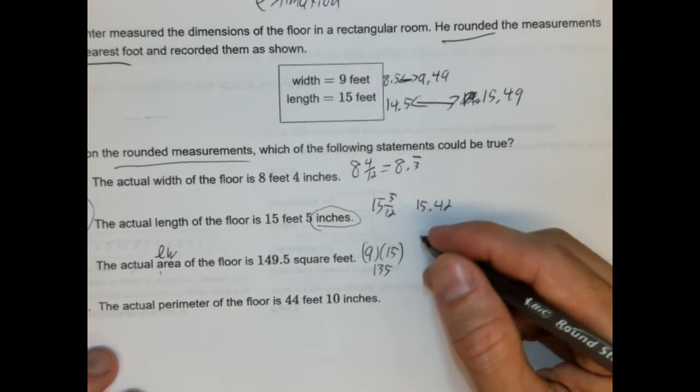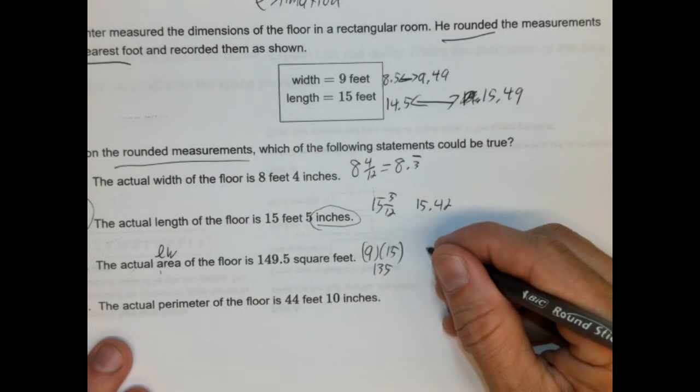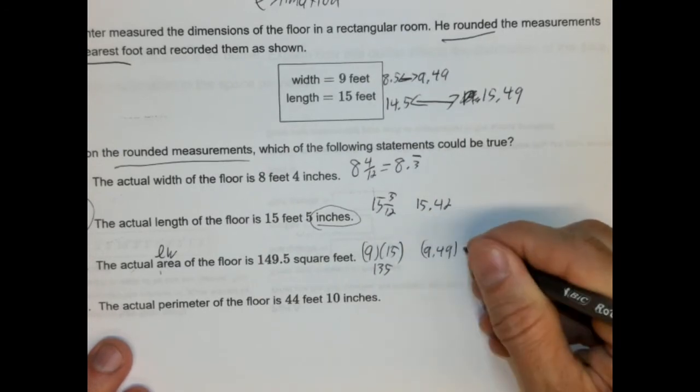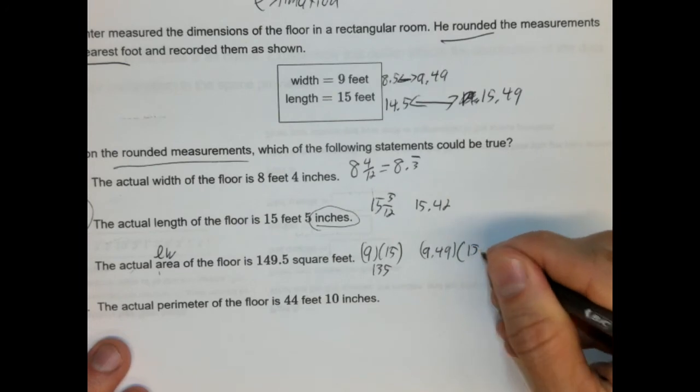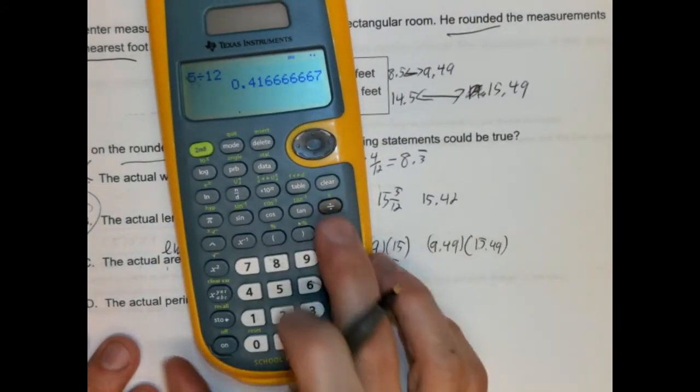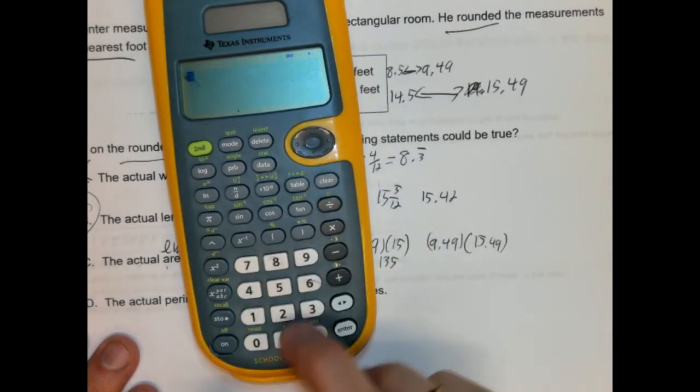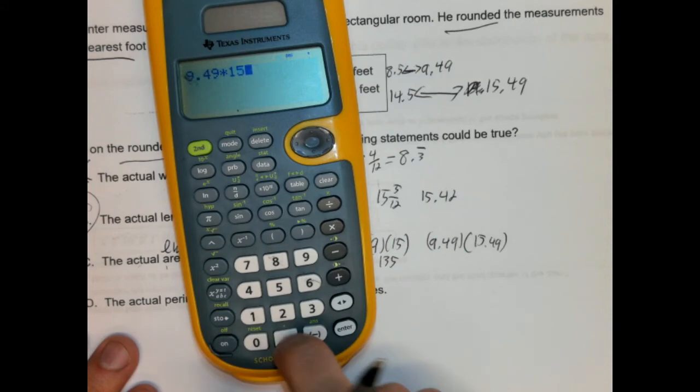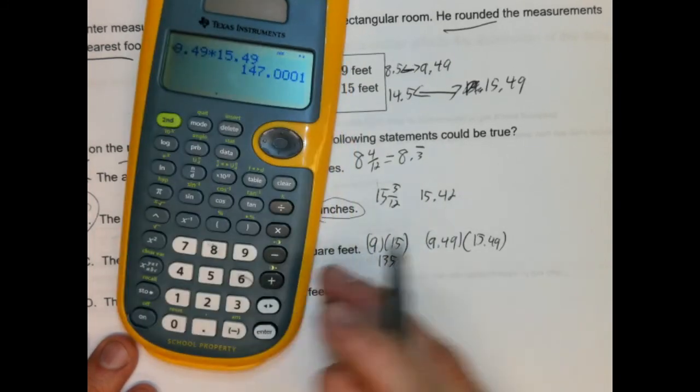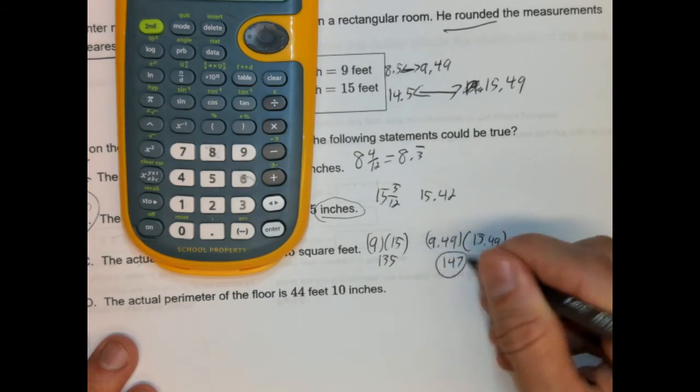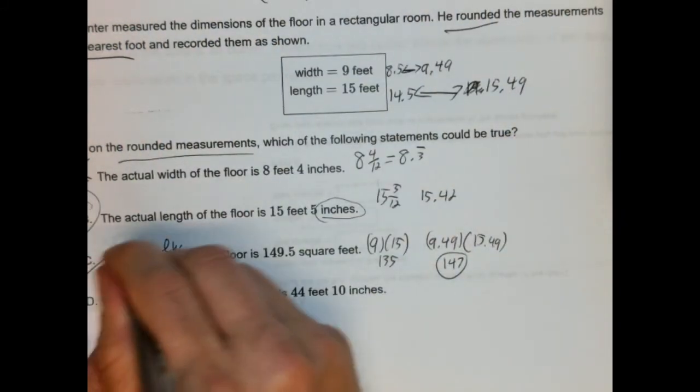Now, if we round this up, let's say we go as big as we can get. Let's go with 9.49 times 15.49. So, let's just multiply those together and see how big we can get this to be. So, let's go with 9.49 times 15.49. We get 147. So, that's as big as it's going to get from the looks of it. So, it's not big enough. So, nope, can't be that.